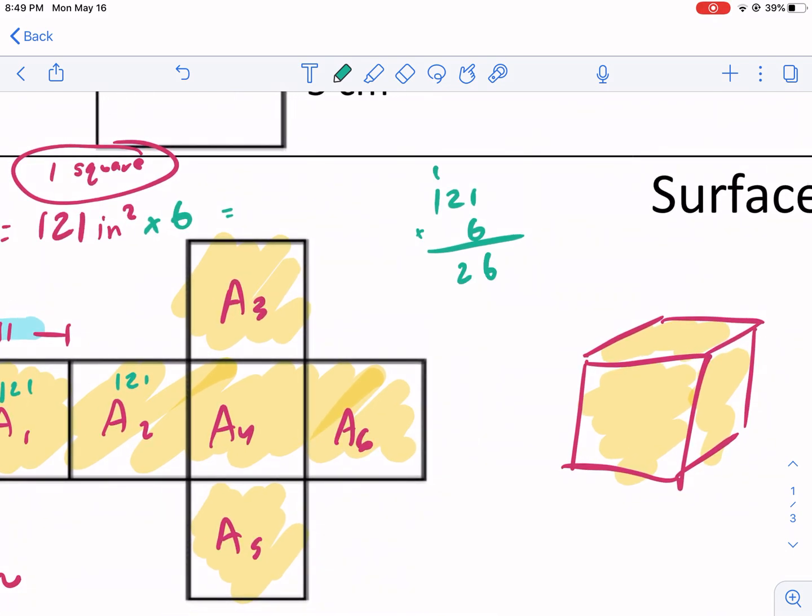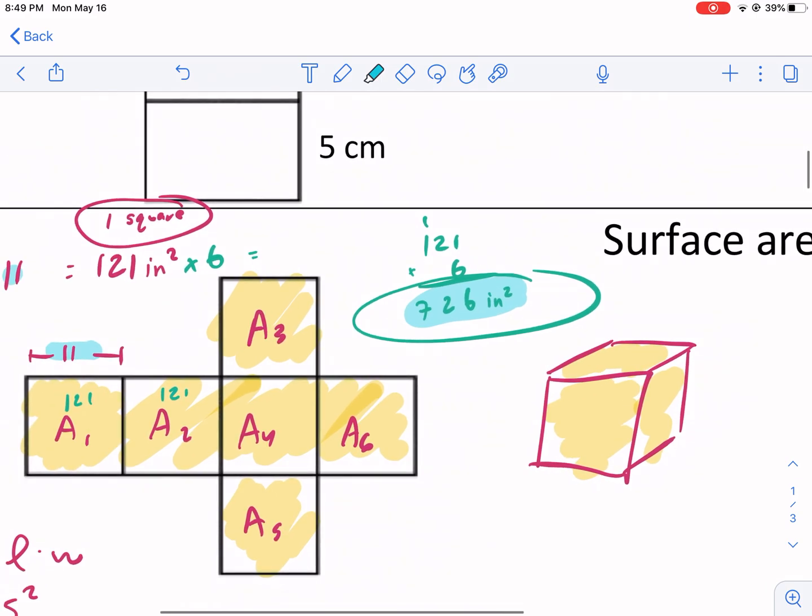Six times 12, carry the one, six times two is seven - 726 inches squared. Don't forget the units. The units are very important because it represents area, not just a distance.